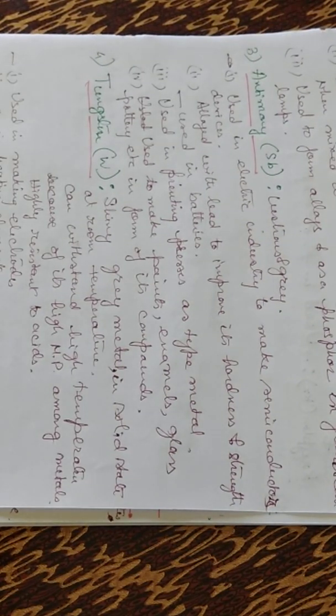Then antimony is a lustrous grey. It is used in electric industry to make semiconductor devices. Alloyed with lead to improve its hardness and strength in the form of alloy. They are used in batteries.